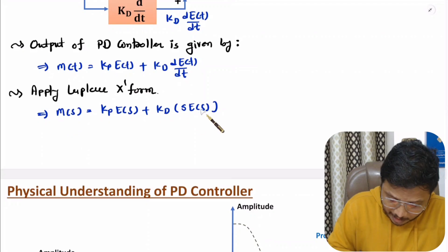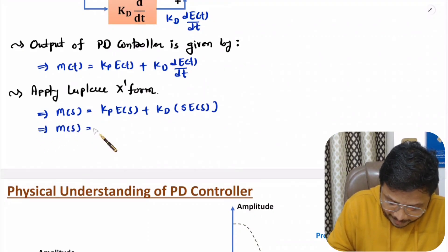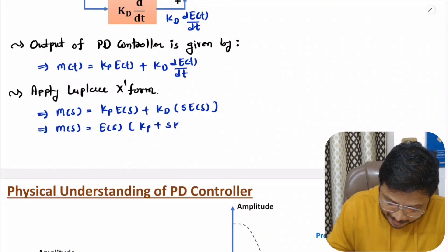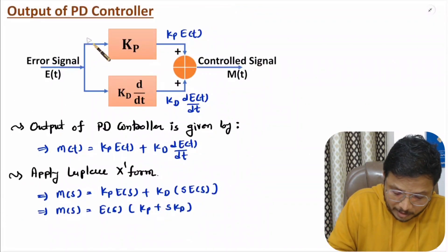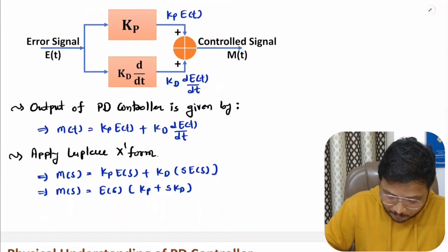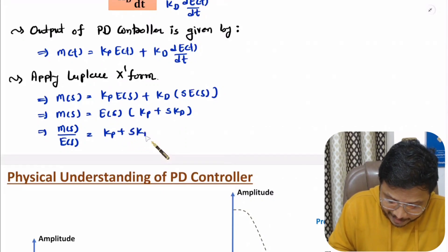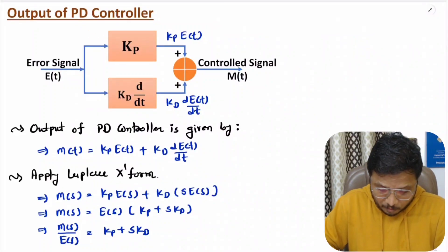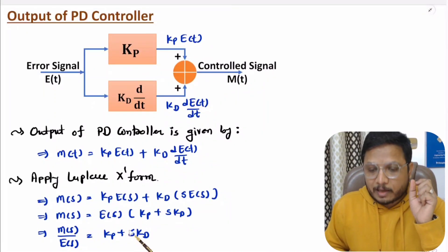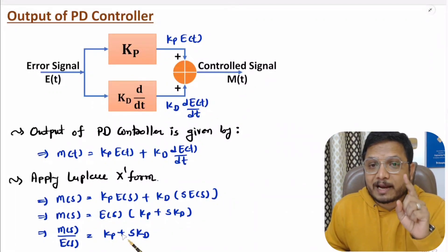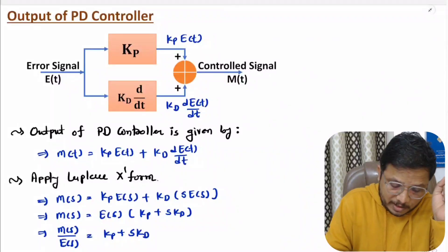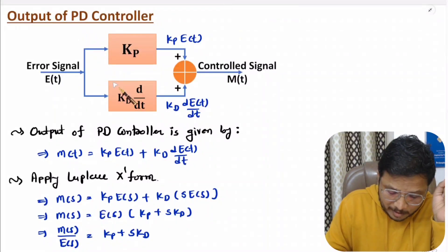Taking E(s) common, the output simplifies to M(s) = E(s)·(Kp + s·Kd). The transfer function is output M(s) divided by input E(s), giving Kp + s·Kd. Observing this, with the PD controller we add one zero in the system — the s term in the numerator represents this zero, and it arises due to the derivative controller.